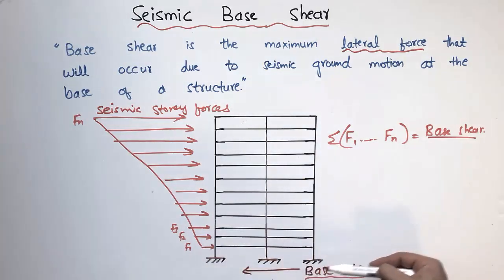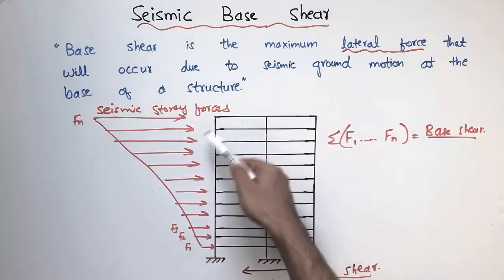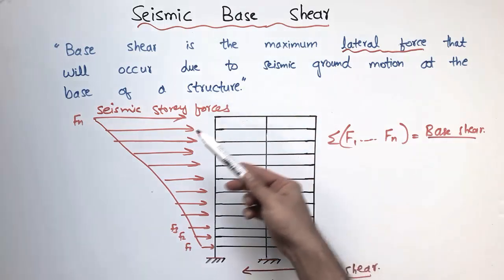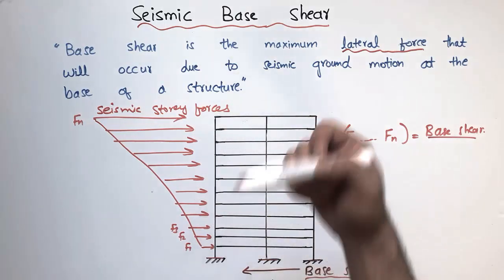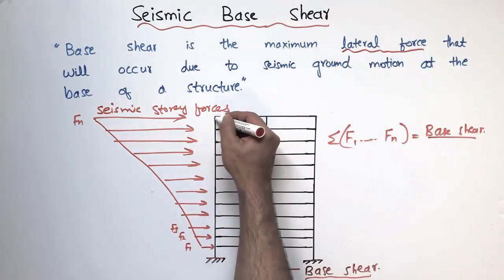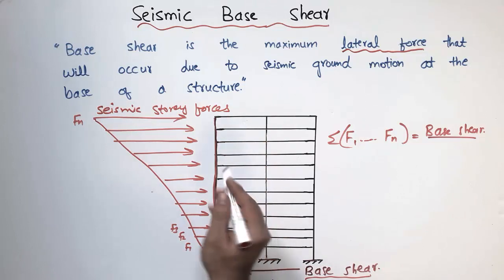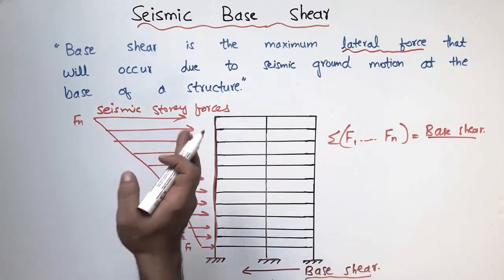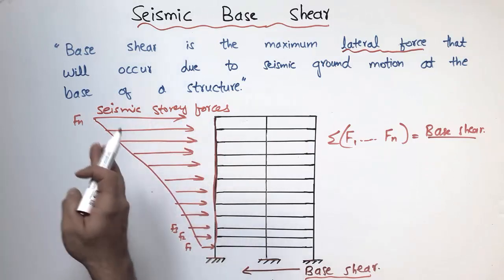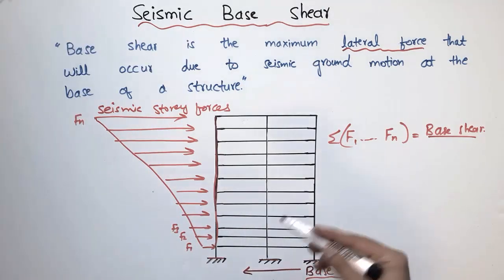The more the base shear, the more lateral forces act on the building. To avoid seismic failure and to increase the lateral stiffness of the building, we use shear walls. In high-rise buildings, shear walls are provided instead of columns because shear walls increase stiffness to resist more earthquake forces and lateral forces from wind.